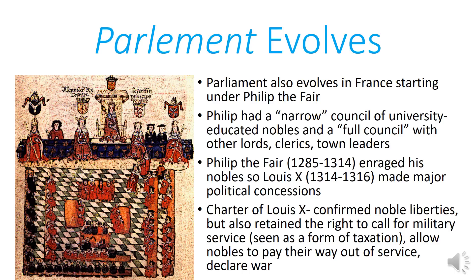Philip died and left those problems to his son Louis X. Louis needed to make peace with the outraged nobles, resulting in the Charter of Louis X. Louis confirmed various noble liberties, but retained important powers: the right to call for military service and declare war, and the right to allow nobles to pay their way out of service — essentially confirming his right to tax. Louis confirmed that nobles needed to be consulted and had a right to attend councils of state, formalizing what had been more informal under Philip.